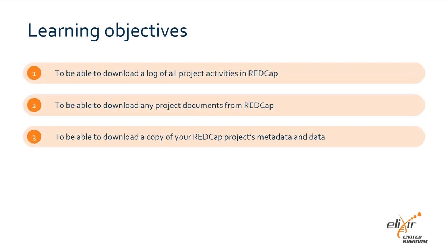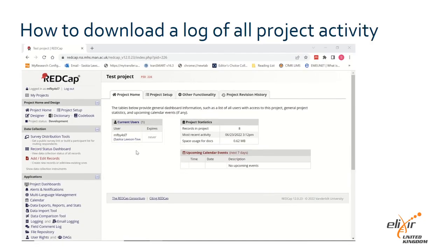In this video I will show you how to find the necessary information you may need for a project audit in REDCap. A project audit is a formal review of a project. In the UK this is usually required by all major research funding bodies to check the research is progressing as expected, the project is being managed properly, and to ensure their funding is being spent appropriately and on schedule. Check with your local institution on specific funding bodies what you are required to do for your project and when.